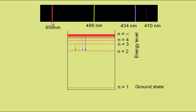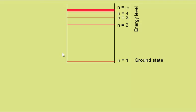So let's look at this red line at 656 nm in a little bit more detail. It's the drop from n equals 3 to n equals 2. On this diagram, we can show it with this arrow from n equals 3 to n equals 2.